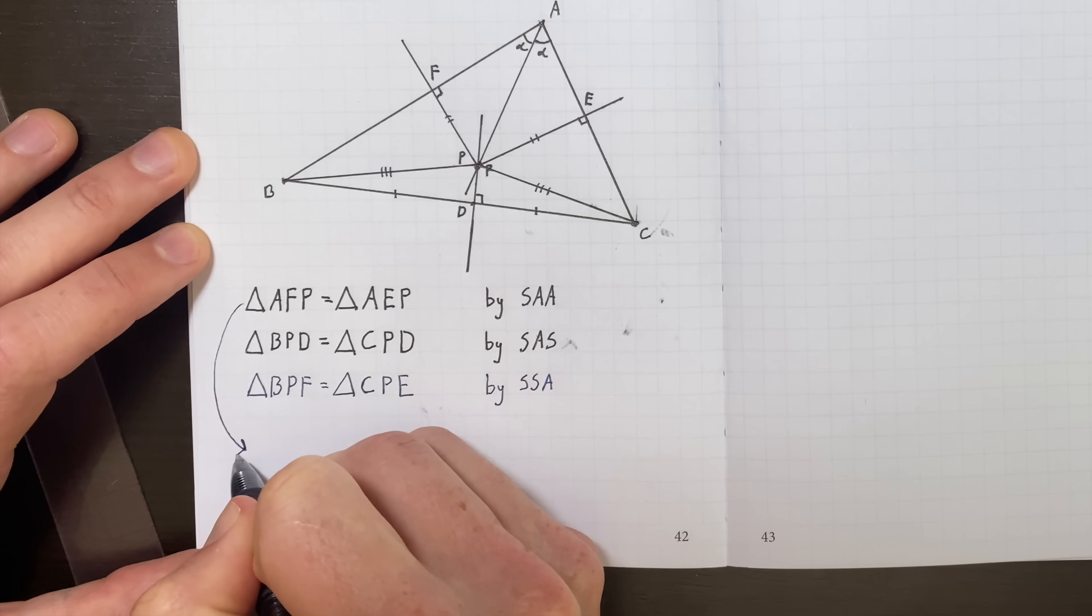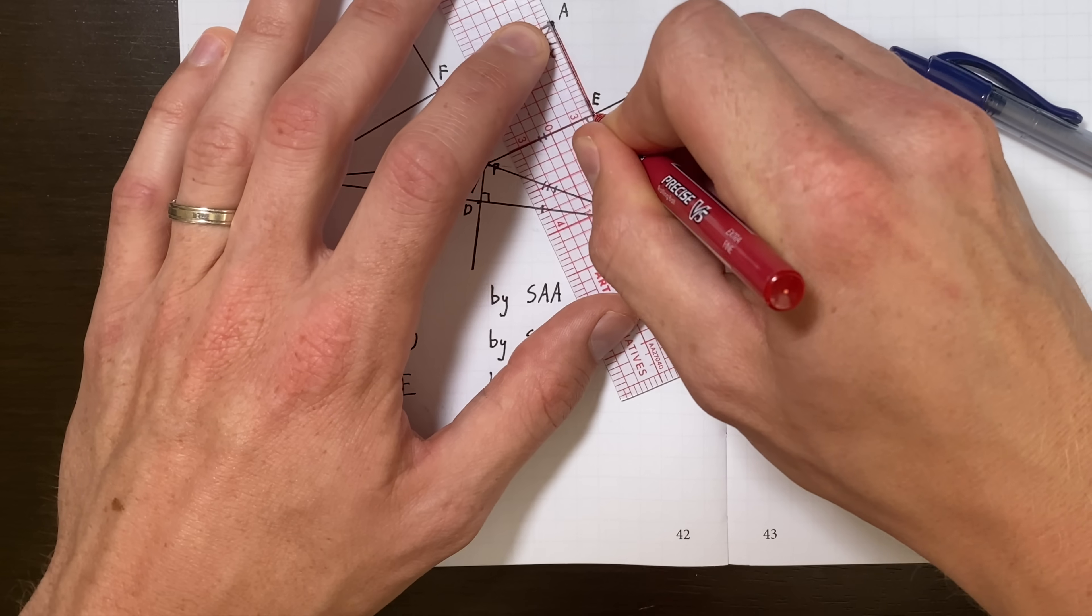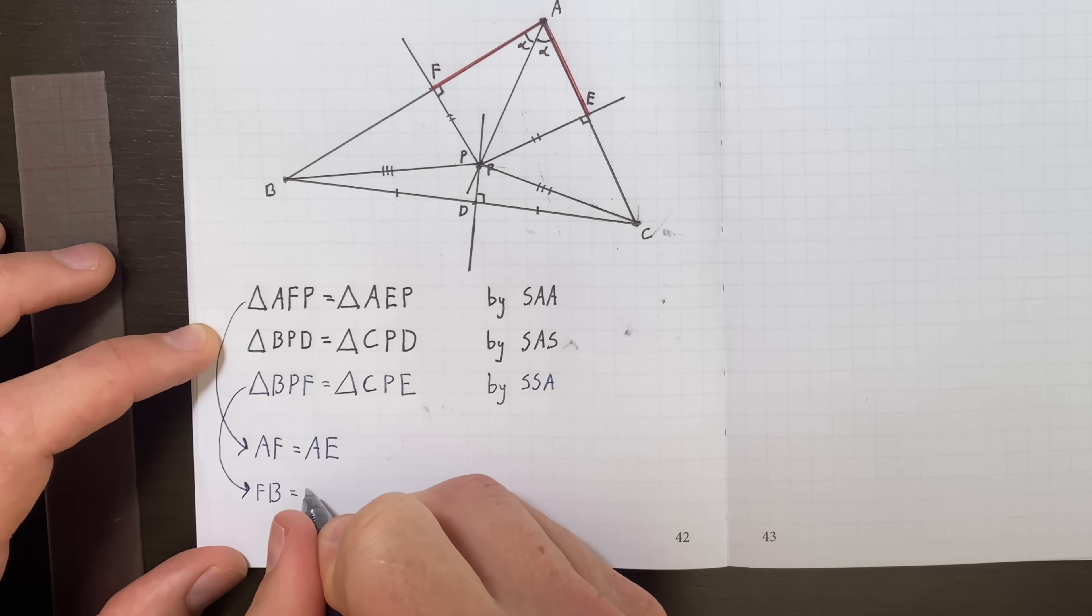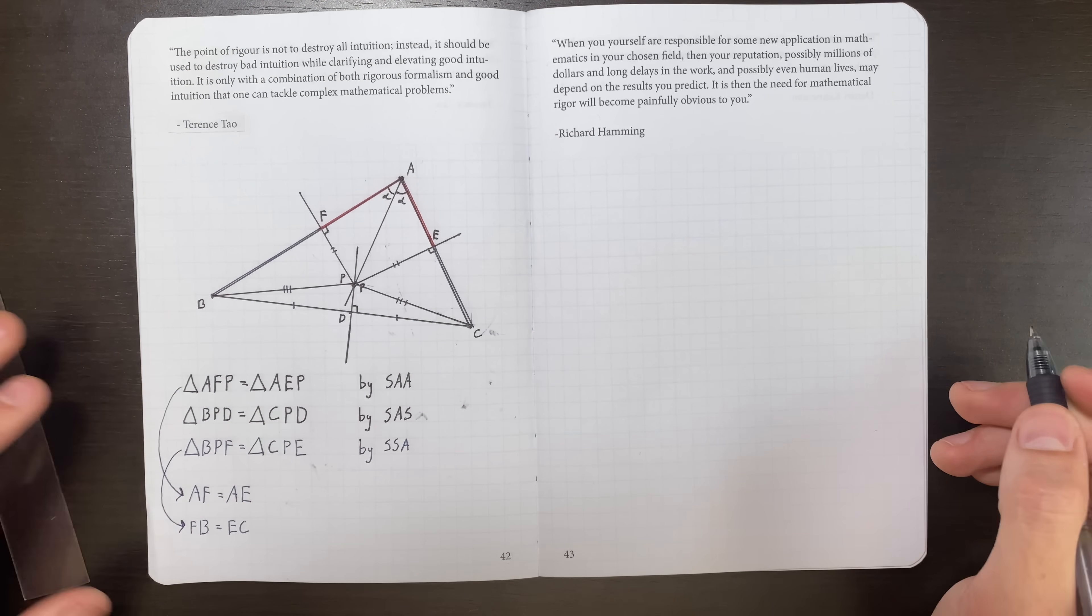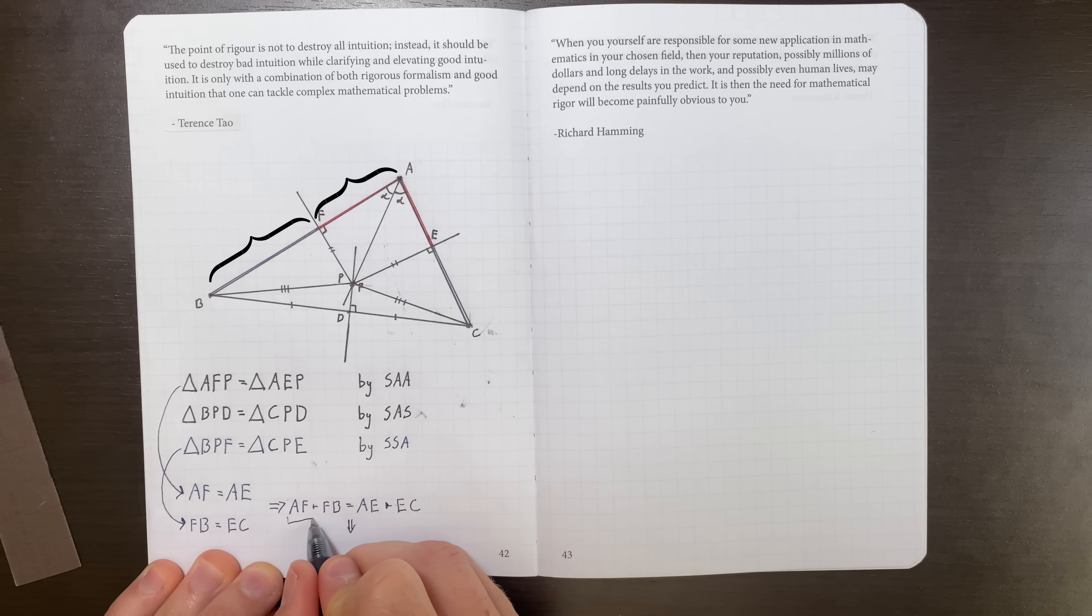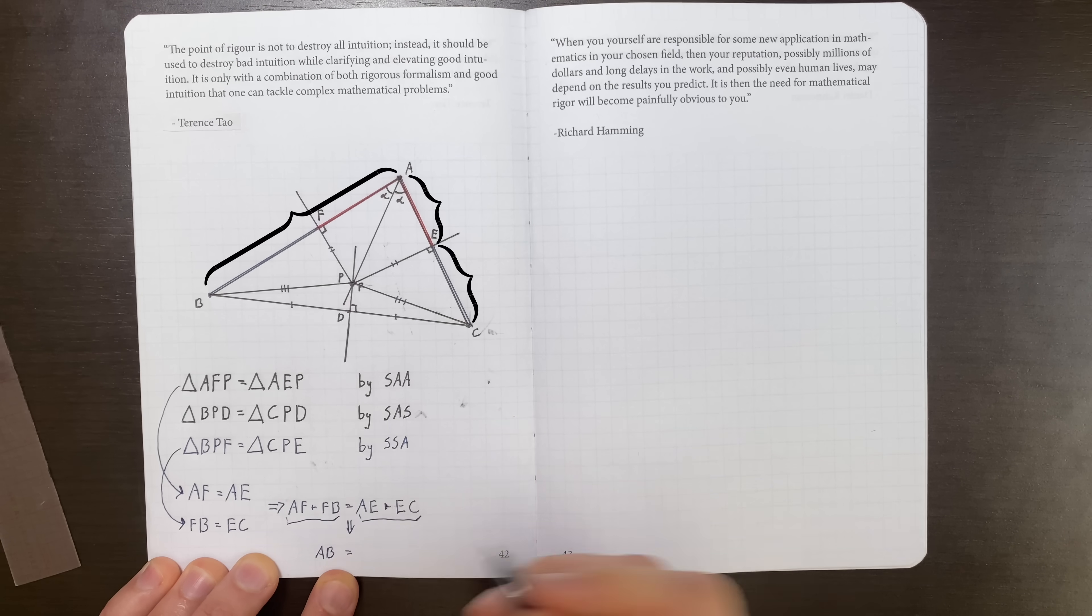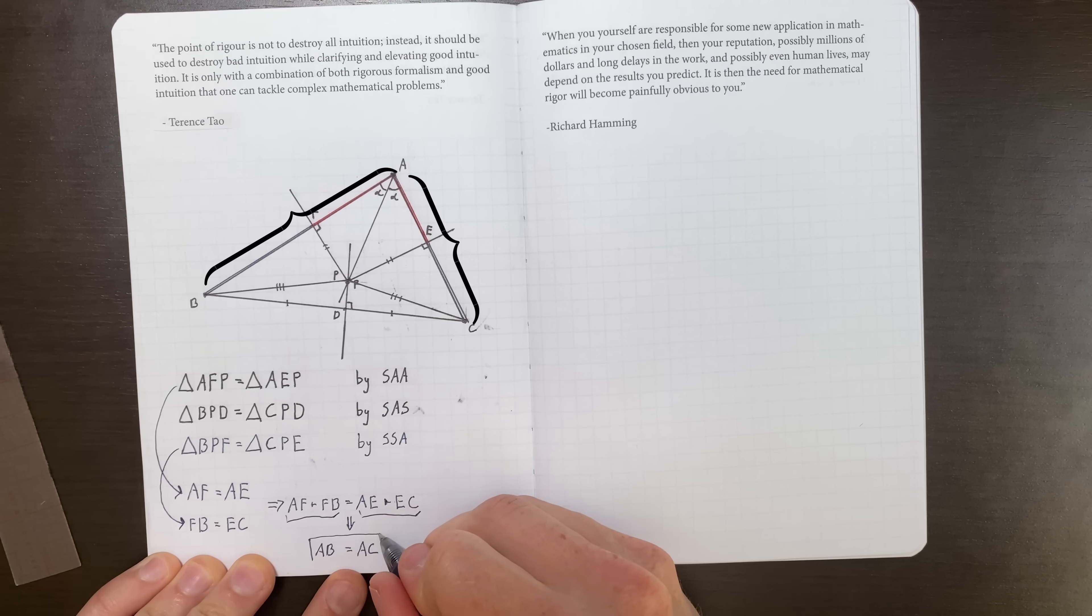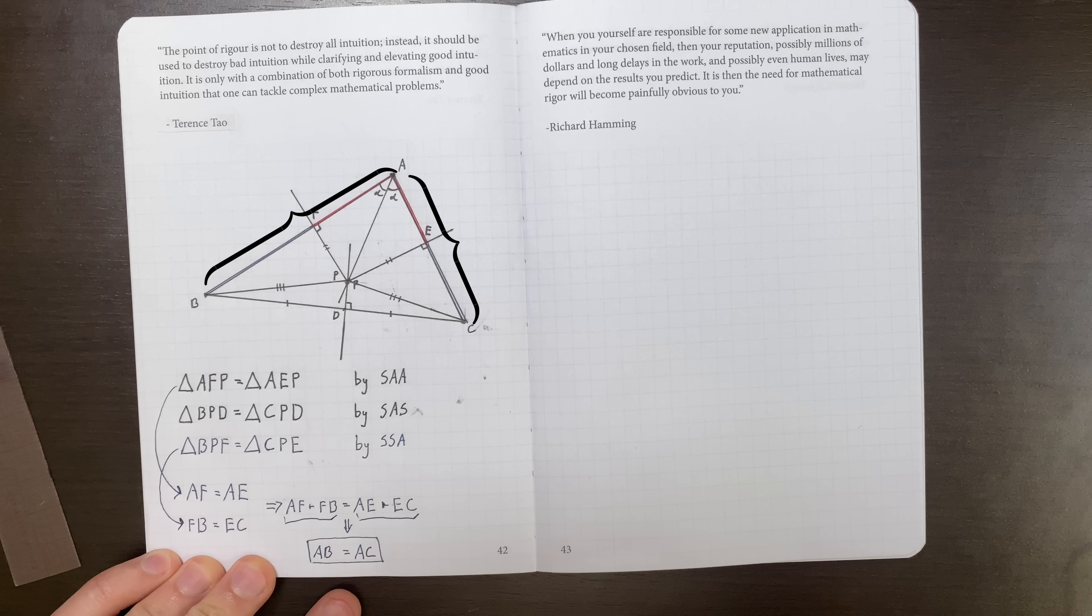And all of this will basically be enough to show us why AB has to be the same as AC. That first pair of triangles implies that the length AF is the same as the length AE. Those are corresponding sides to each other, I'll just color them in red here. And then that last triangle relation guarantees for us that the side FB is going to be the same as the side EC. I'll color both of those in blue. And finally, the result we want basically comes from adding up these two equations. The length AF plus FB is clearly the same as the total length AB. And likewise, the length AE plus EC is the same as the total length AC. So all in all, the side length AB has to be the same as the side length AC.